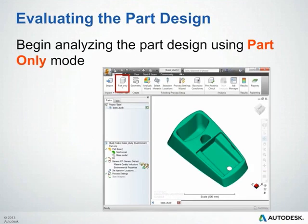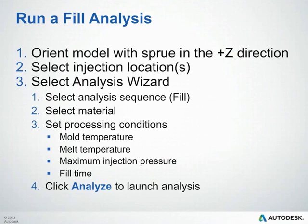Typically when you're evaluating your part design, you're going to start off in part-only mode. This is going to be an iterative process, so we're not going to invest a lot of time modeling a feed system or cooling lines at this point. If you're ready to run a fill analysis, there are a few key steps: orient the model in the positive z-direction, select the injection locations — hopefully the gate location analysis helped — then go into your analysis wizard, select fill as the analysis sequence, select the material, select the processing conditions (ideally derived from the molding window), and click Analyze.